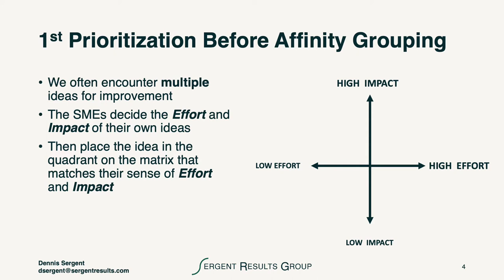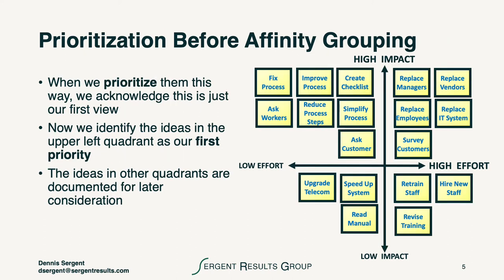It's relatively simple and requires only two decisions: what's the level of impact and what's the level of effort. Before we do any affinity grouping, we do some prioritization using this method. After we've looked at where the ideas fall on this grid, we decide that the highest priority will be the ideas in the first quadrant — low effort and high impact — the upper left.